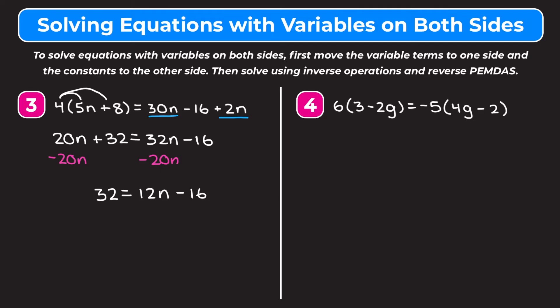Now I need to get the constants to one side, so I have to move this minus 16 from the right to the left using the inverse operation, which is addition. So I'm going to add 16 to both sides. 32 plus 16 is 48, so I have 48 on the left and 12N on the right. Then I divide both sides by 12: 48 divided by 12 is 4. So N equals 4.